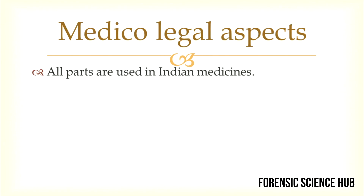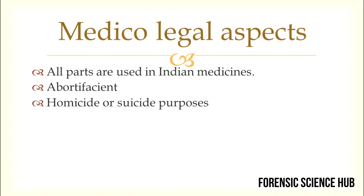Regarding medico-legal aspects, all parts of the Calotropis procera plant are used in Indian medicine. The flowers are digestive stimulants, the powdered root is used as an emetic, and the milky juice obtained by incision is used as a vesicant and for treatment of chronic skin conditions. The juice may be taken orally or applied on an abortion stick to procure abortion, making it an abortifacient. It can also be mixed with milk for infanticide, and is rarely used for suicidal or homicidal purposes.